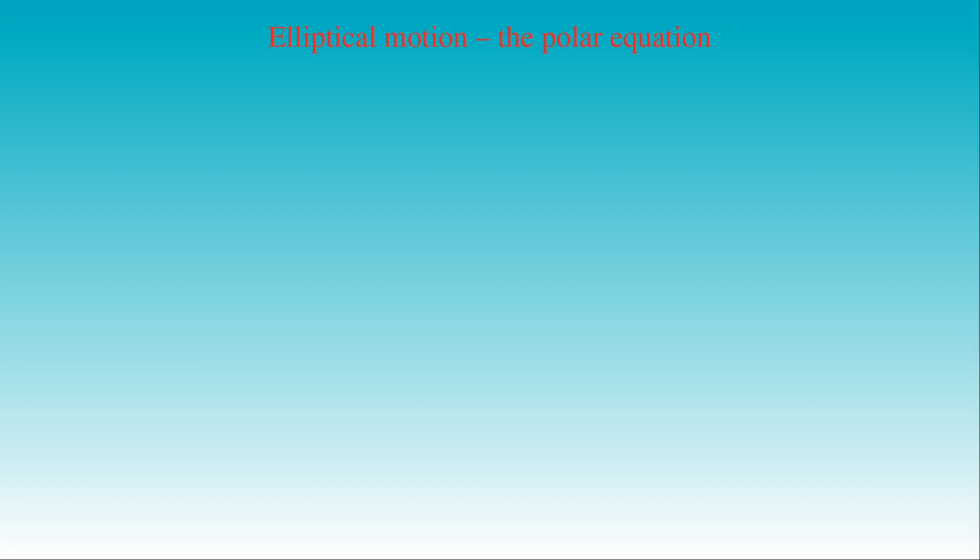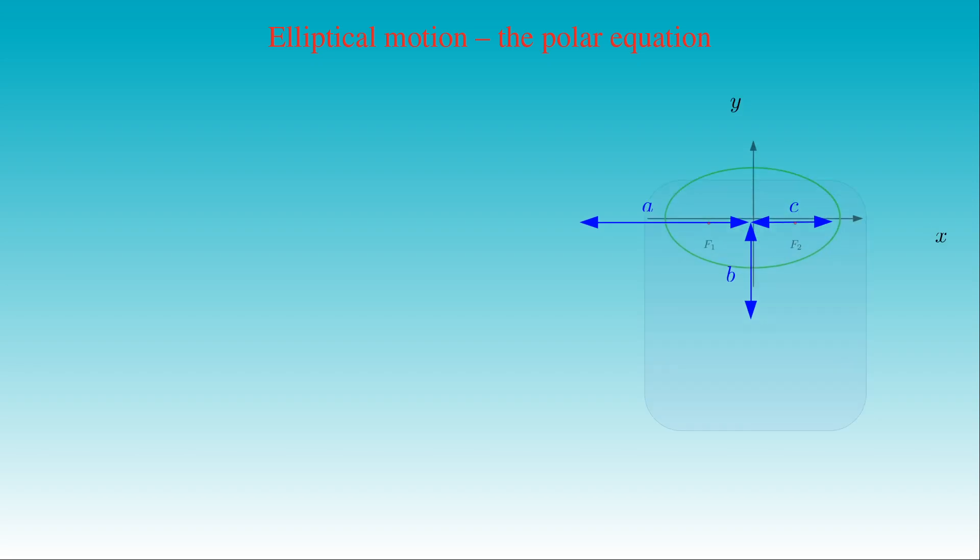An ellipse is a closed plane curve with two fixed points F1 and F2, separated by a distance of 2 times C. Here we can see an ellipse with its center in the origin of the Cartesian coordinate system. The length of its semi-major axis is denoted by A, and the length of its semi-minor axis is equal to B.